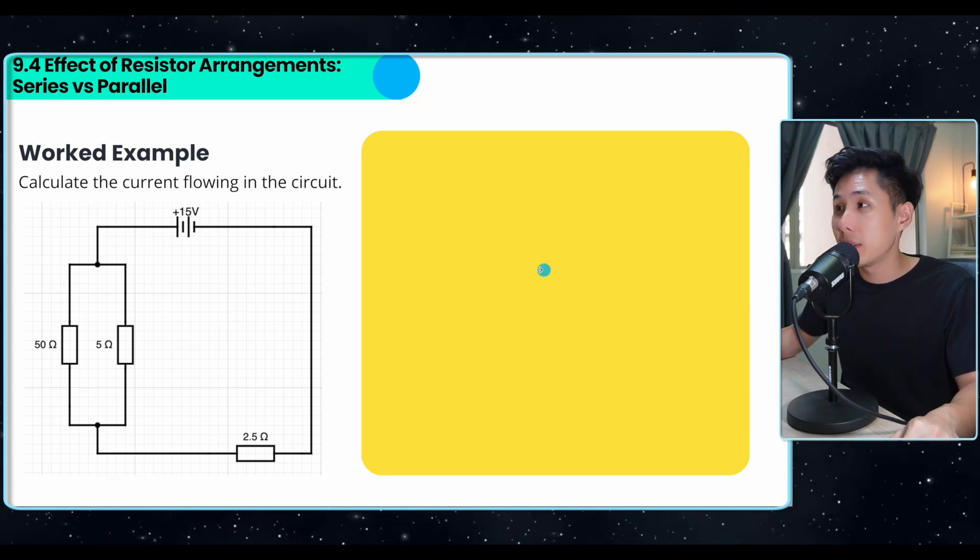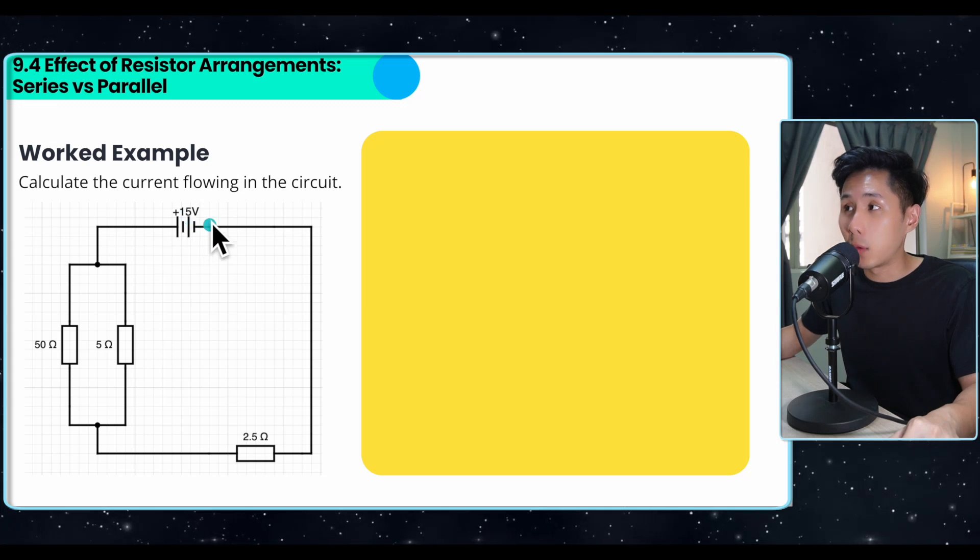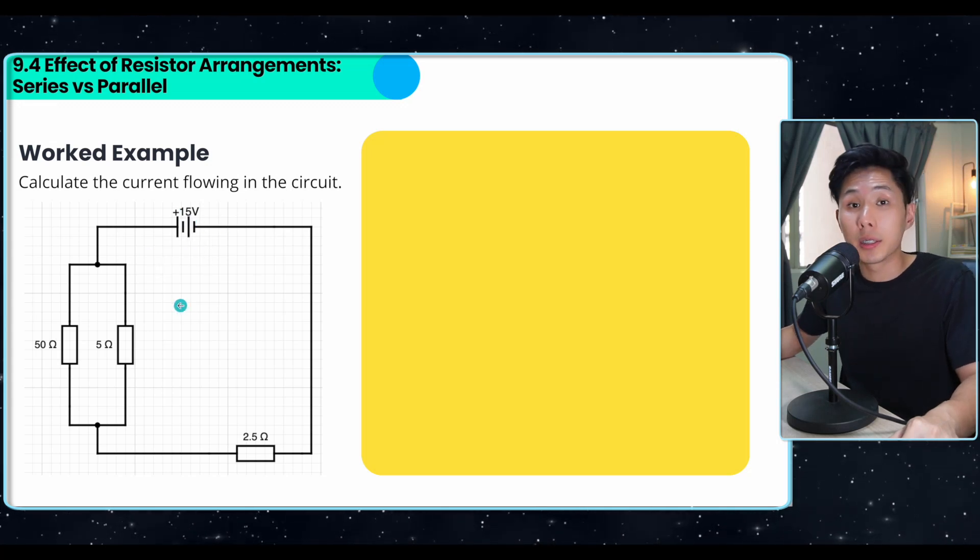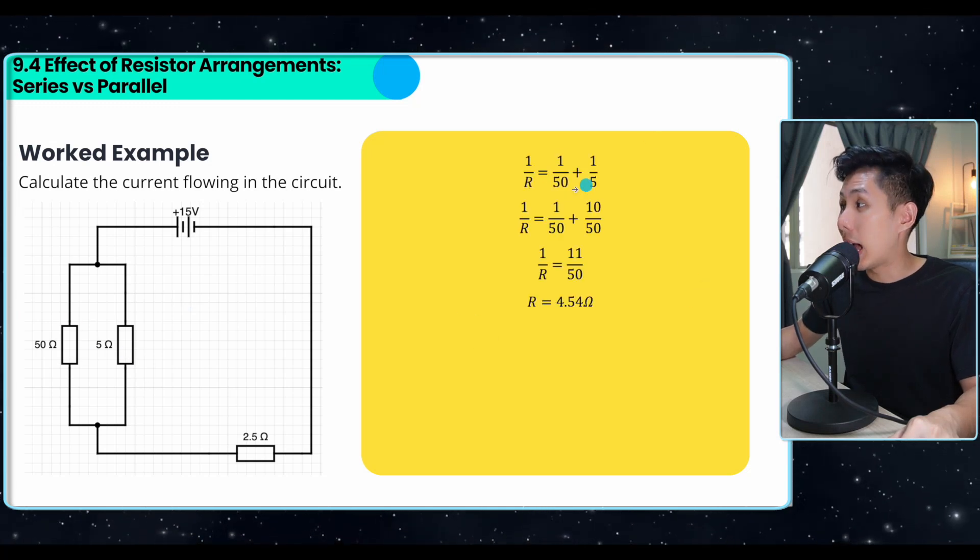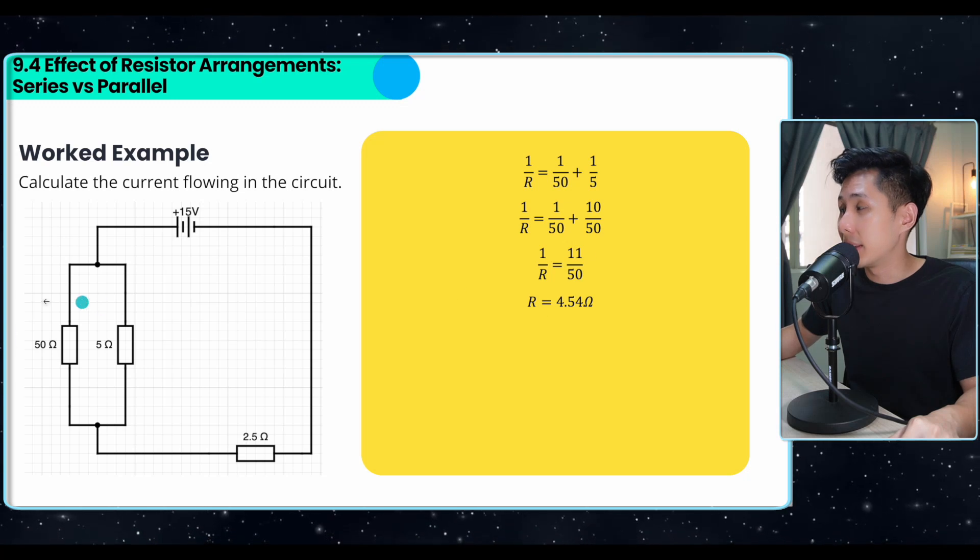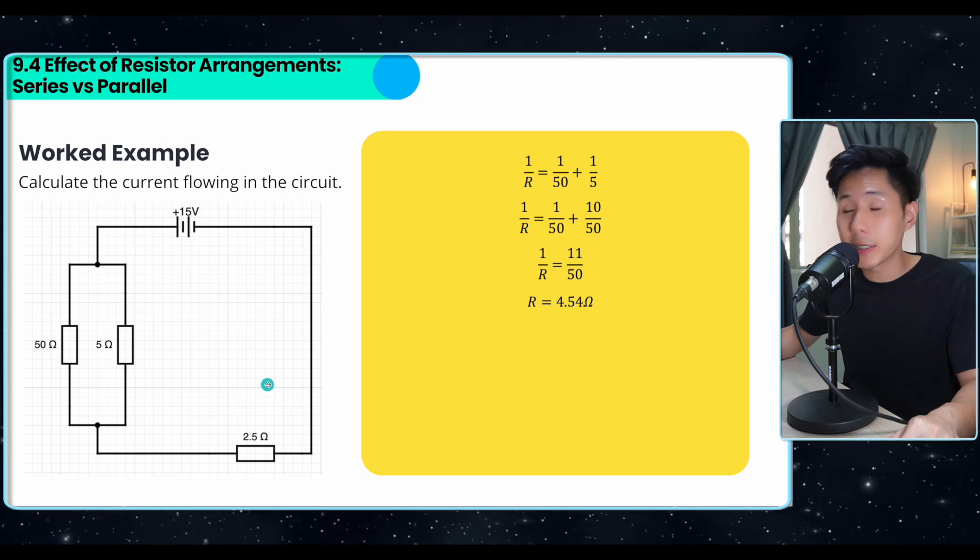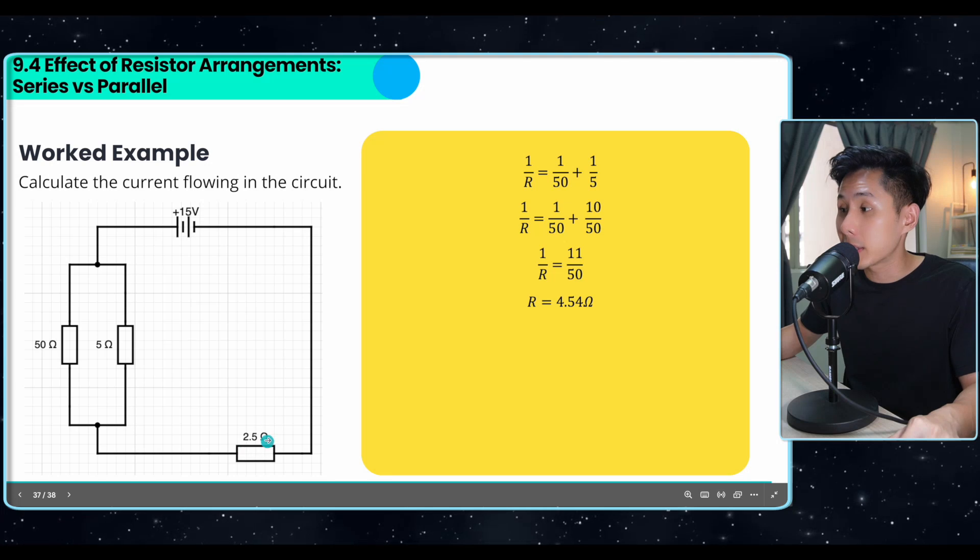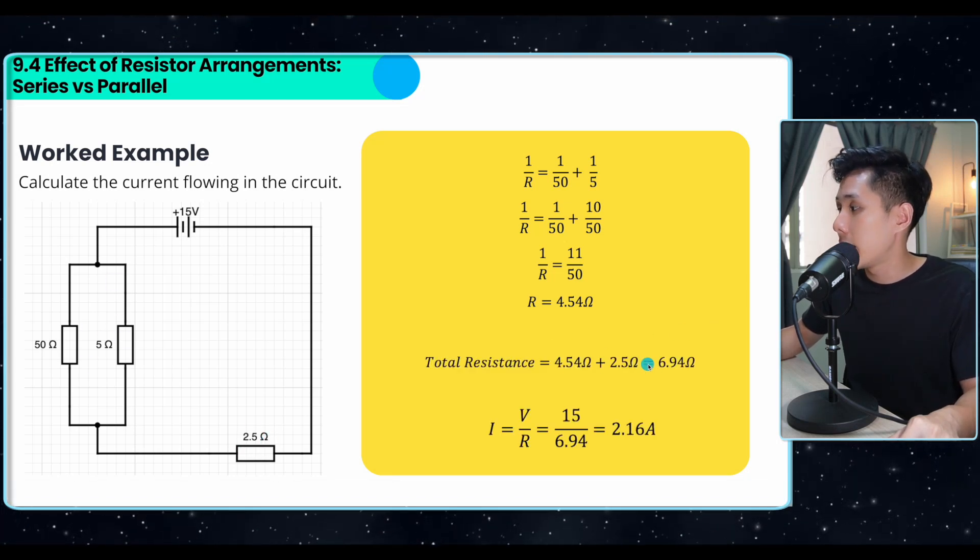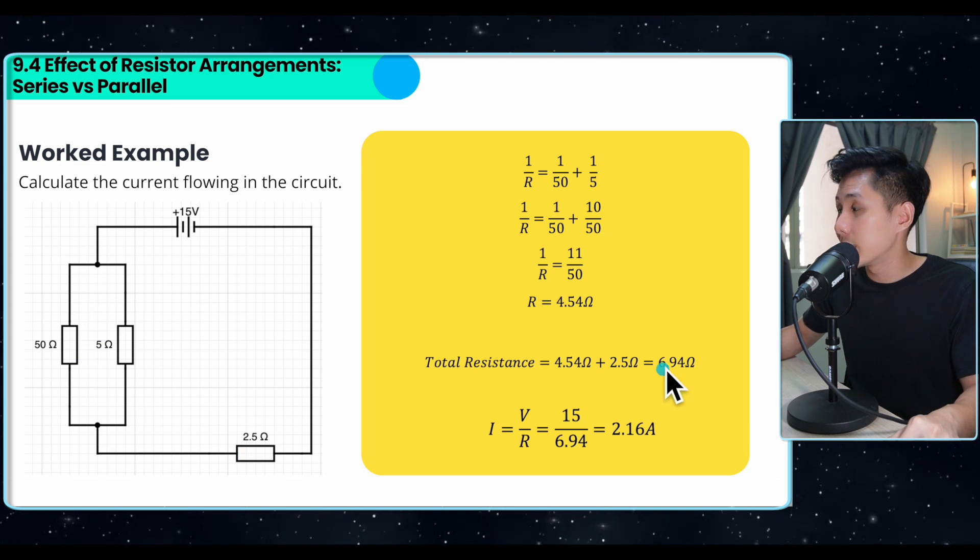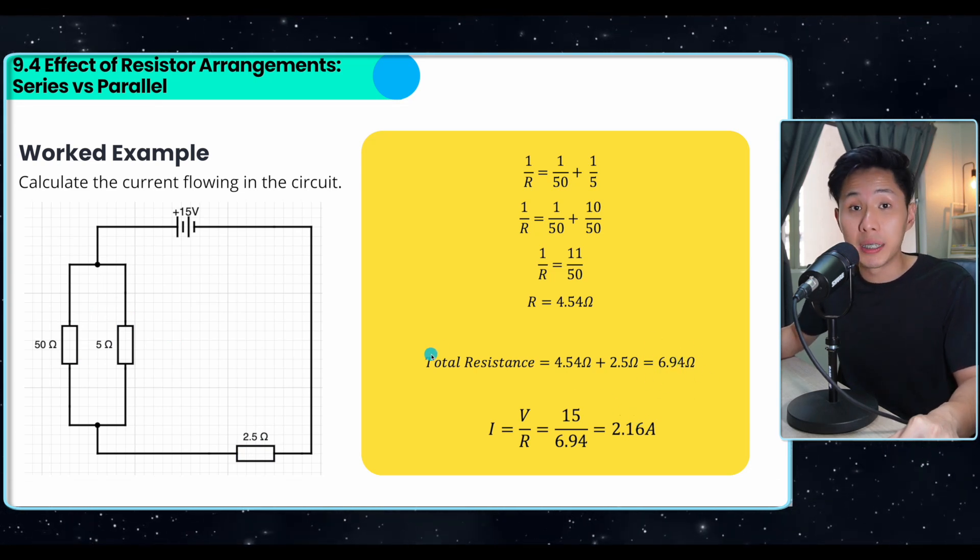Well, the last question for the video, how do we calculate the current flowing in the circuit? So first, we know that we need voltage, for sure. We also need the combined resistance of the circuit. So I'm going to solve this part using the formula that I learned just now. And then we will find out that the effective resistance of this part of the circuit is 4.54. And that's not the final resistance because we still need to add this up. It is connected in series with this branch. And therefore, I'm just adding this up. And I would have found out the total resistance and using the value here, I would have found out the total current flowing in the circuit.